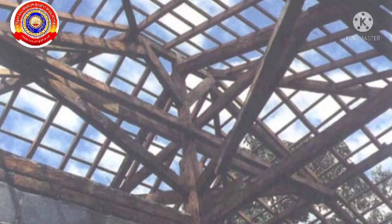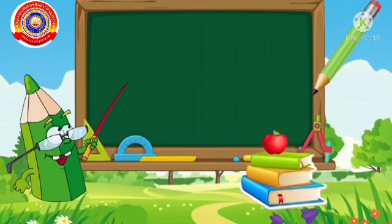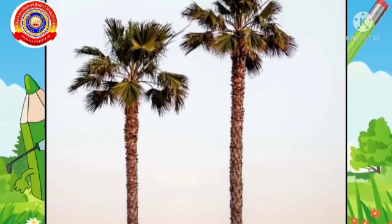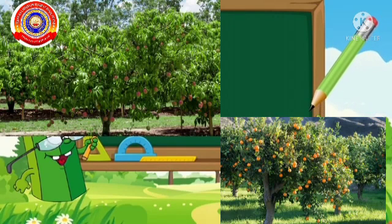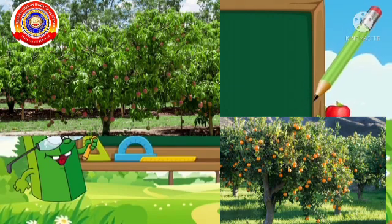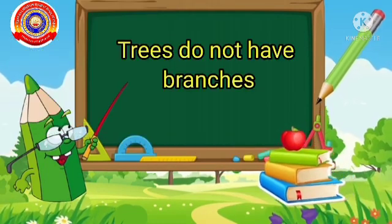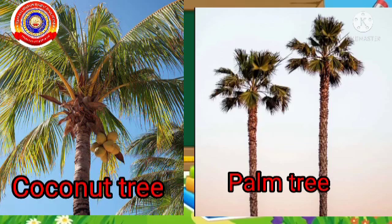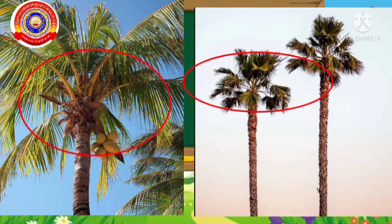We use the woody trunk of trees in the construction of houses. Can you name some examples of trees? Mango tree, orange tree, coconut tree, palm tree, jackfruit tree, etc. Trees like mango, orange, etc. give us fruits. But there are some trees that do not have branches — coconut tree, palm tree, etc. These trees grow very tall and they have a cluster of leaves at the top.